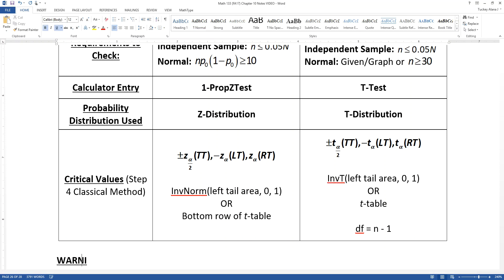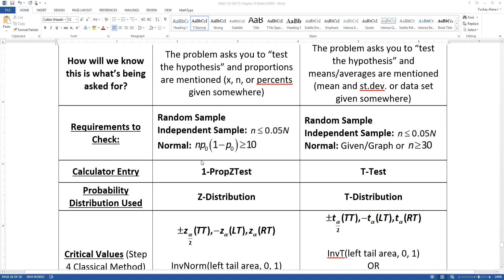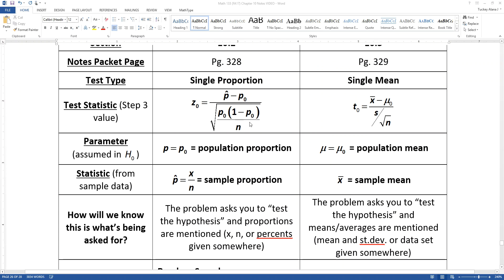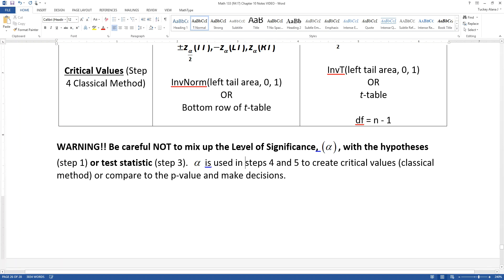Before we leave this page, I want to issue you a warning. Be careful not to mix up the level of significance alpha with either your hypotheses in step 1 or your test statistic in step 3. Alpha is used in steps 4 and 5 to either create your critical values with the classical method or to compare to the p-value and make decisions. Don't start throwing alpha earlier into the test statistic formula. A lot of students try to do that, and it's a recipe for disaster. Be very careful that whatever number you wrote for step 2 as your alpha level is not getting mixed up into earlier parts of the formulas.